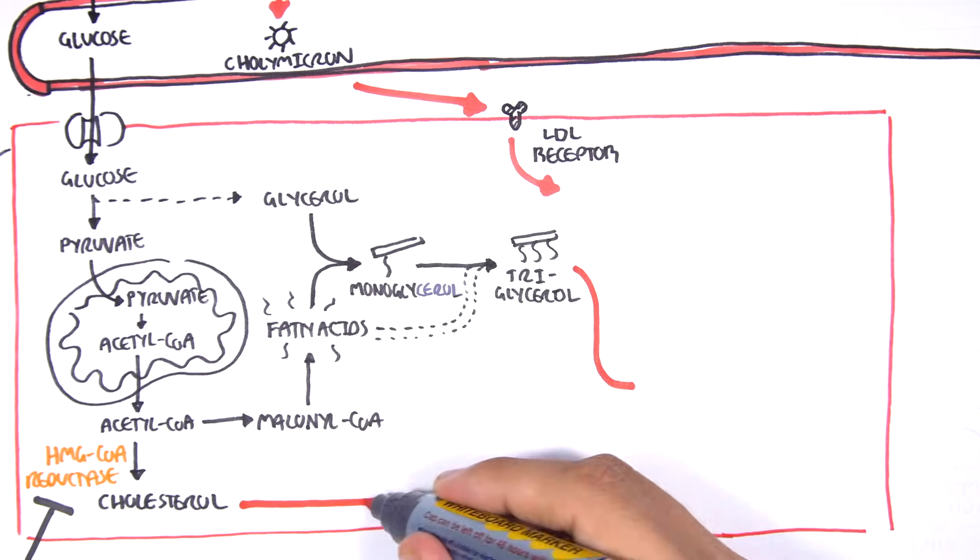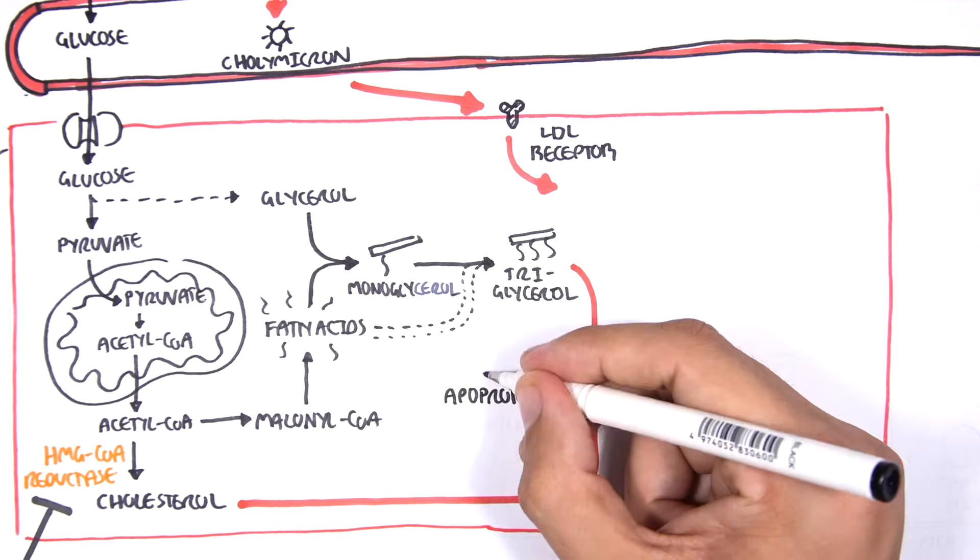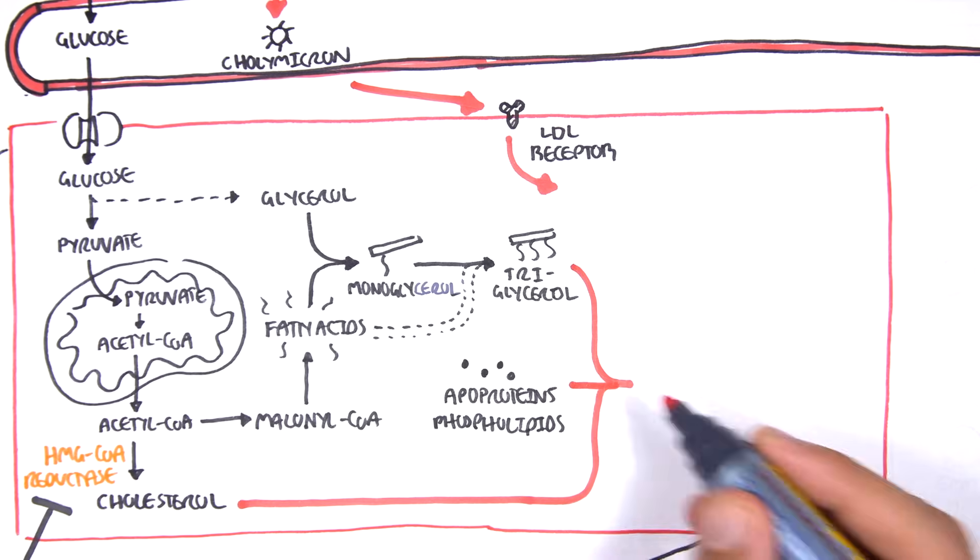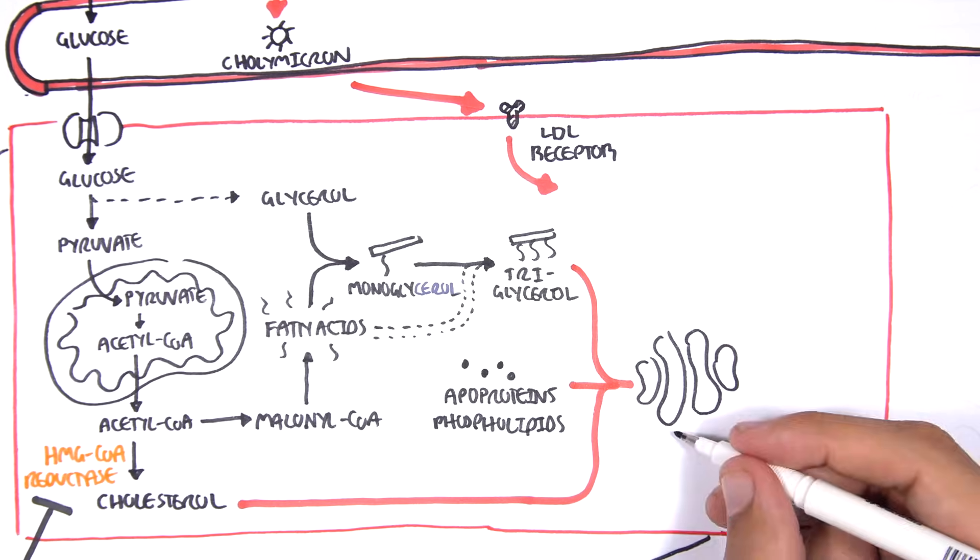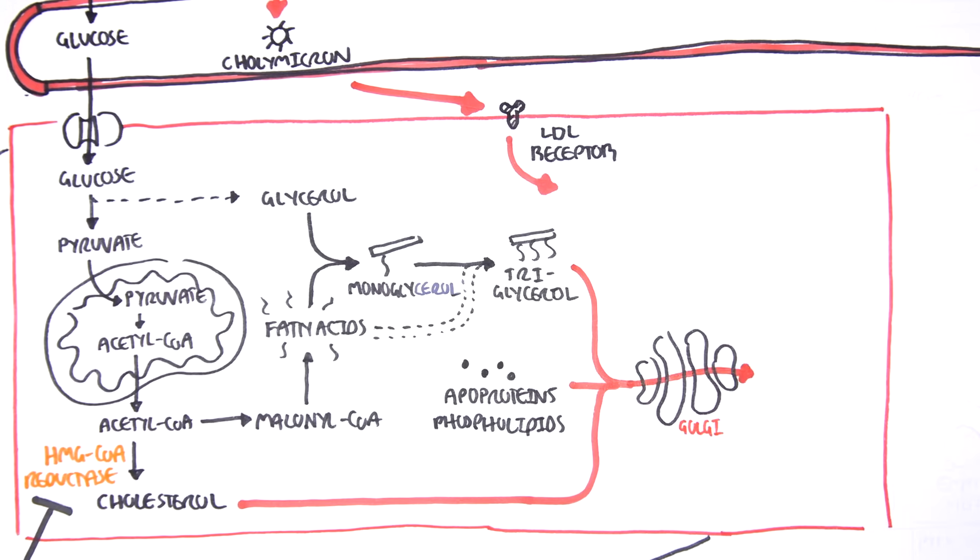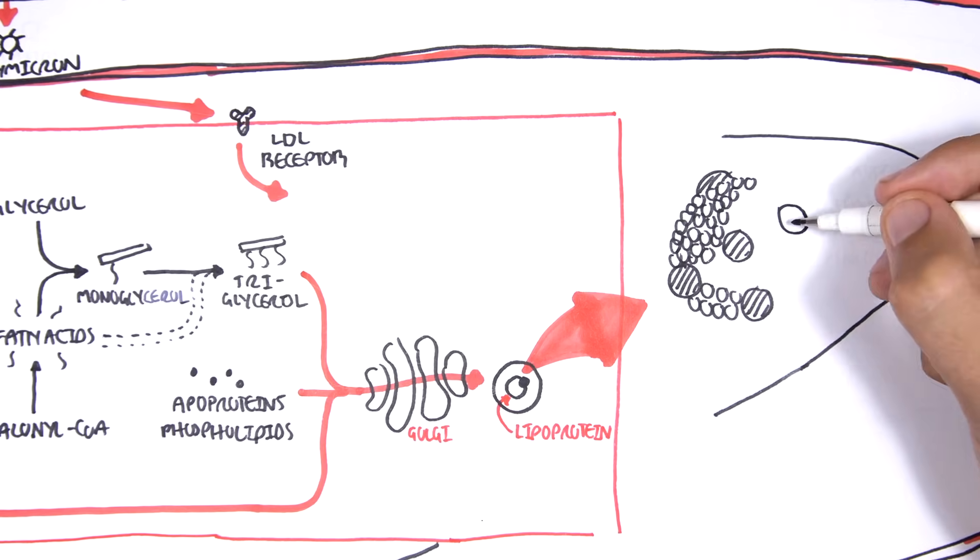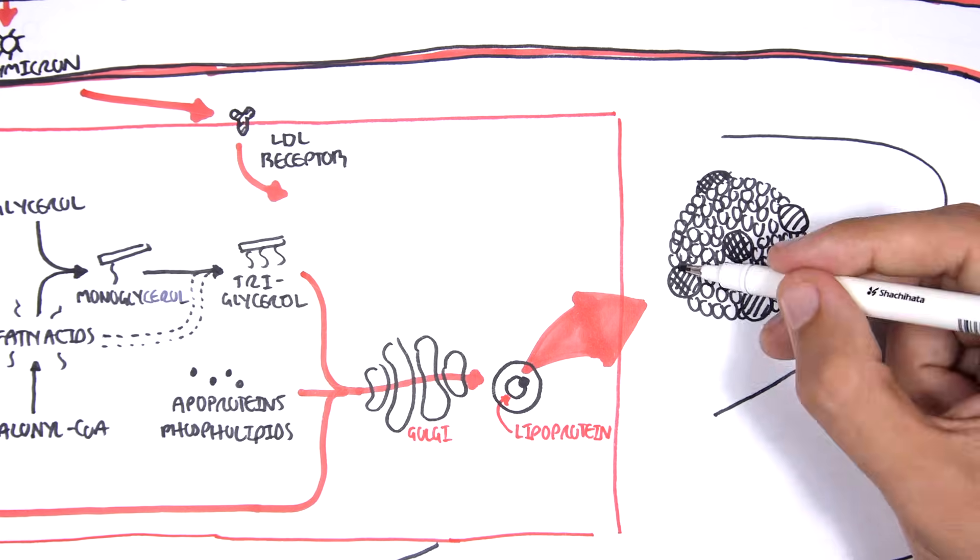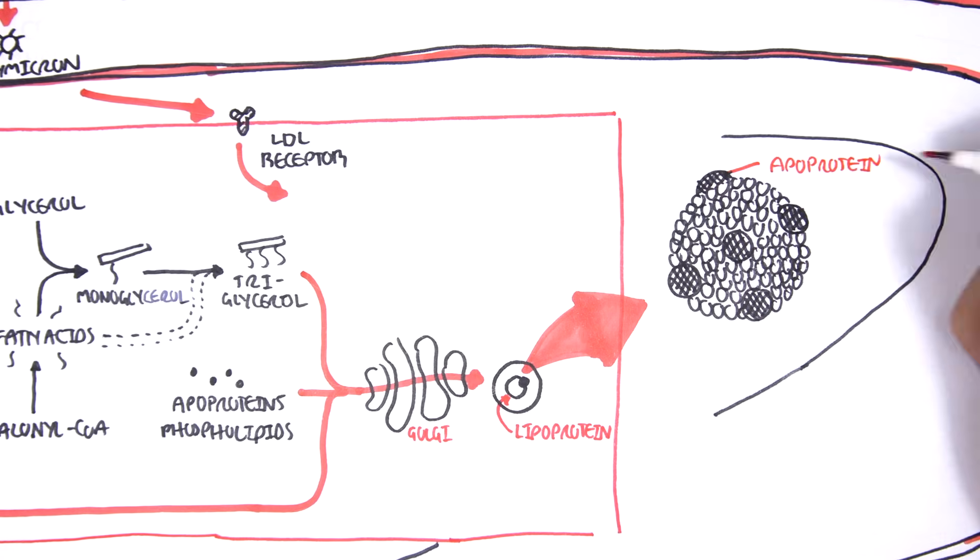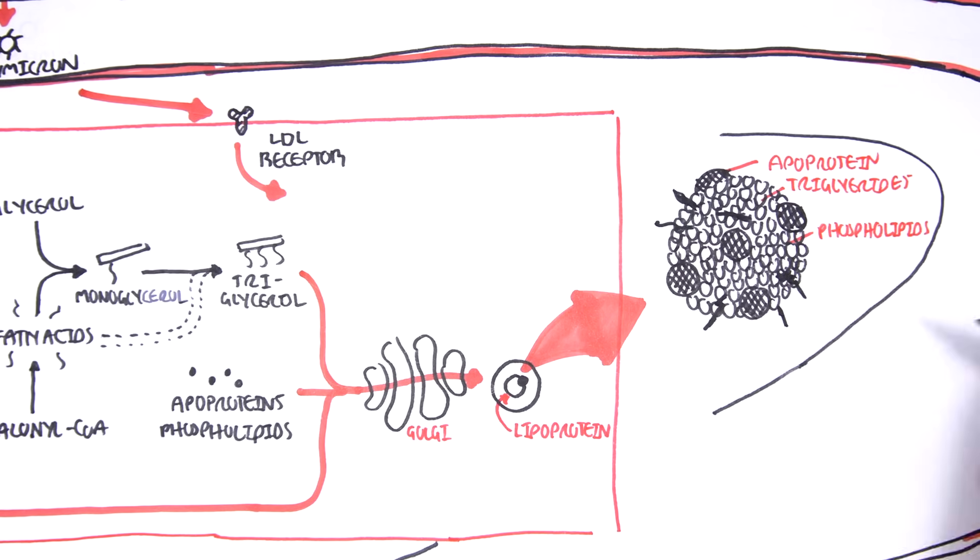The triglyceride, cholesterol, as well as apoproteins and phospholipids, can get packaged up through the Golgi apparatus to form a lipoprotein. Lipoproteins contain proteins (the apoproteins), triglycerides, phospholipids, and cholesterol.